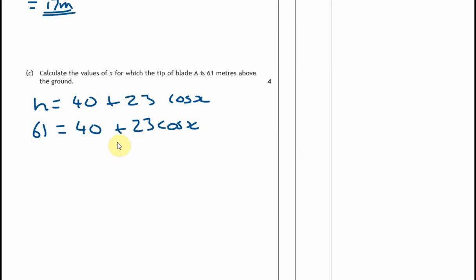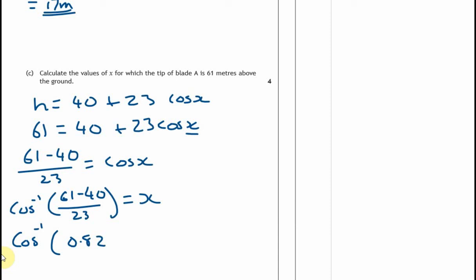So how do we solve that then? If someone gave us this equation, I think we would instantly know what to do. We want to rearrange to make x the subject effectively. So 61 take away 40 divided by 23 equals cos x. I've said if you're plus 40, how do I move it over? Take it away. And then I'm doing 23 times cos x - I divide it. Then just do our shift cos, cos to the minus one to give us x, inverse cos. So 61 minus 40, that's going to give us 21. And then 21 divided by 23, what's the decimal for that? 0.913. So cos to the minus one of 0.913 equals x.